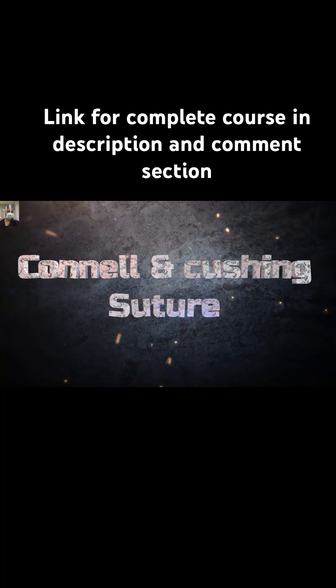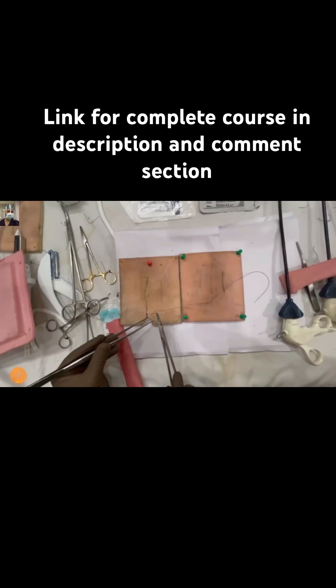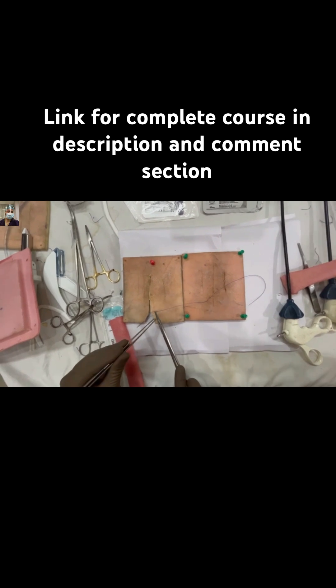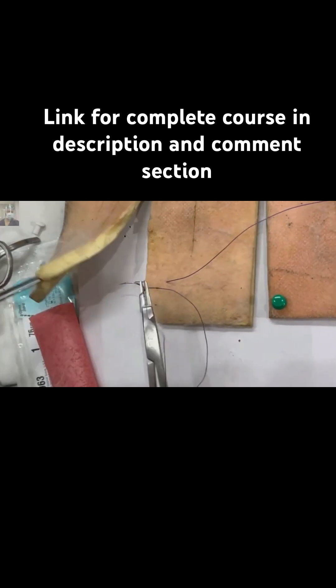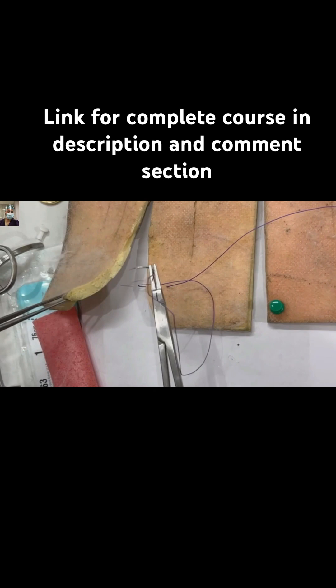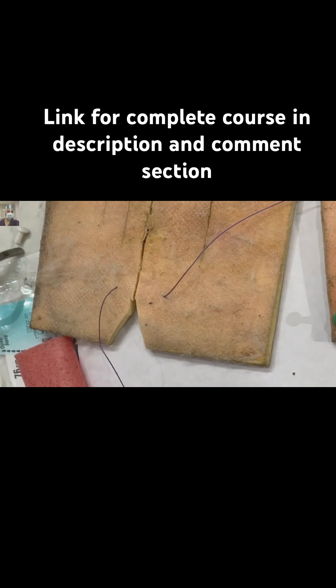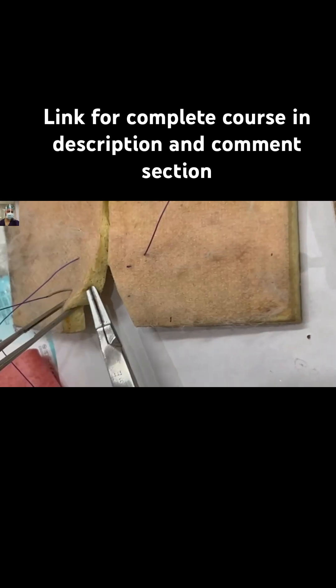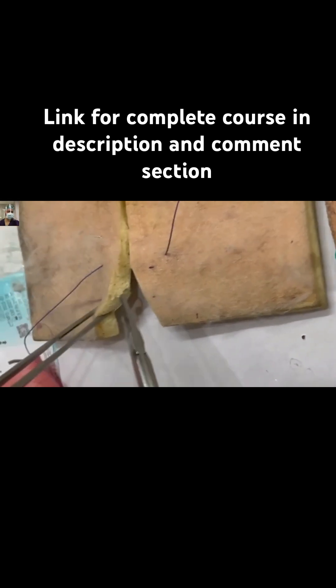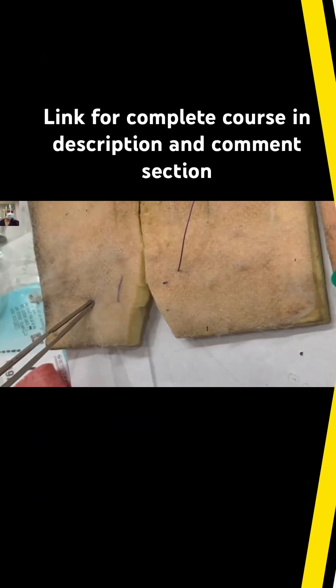At the beginning of this video, friends, please understand the basics. You need to take the muscle propria and part of the submucosa. Then we will come approximately 4mm from the wound margin.